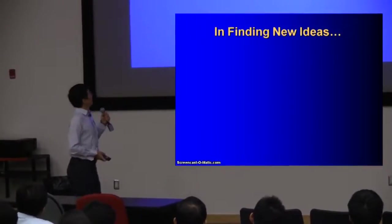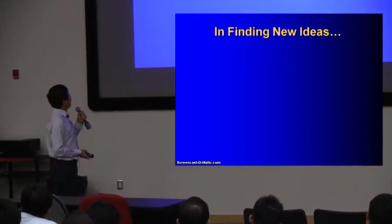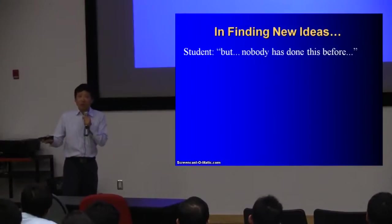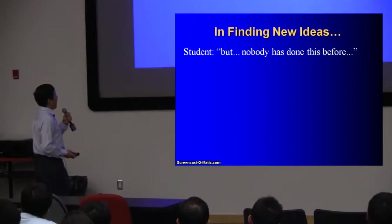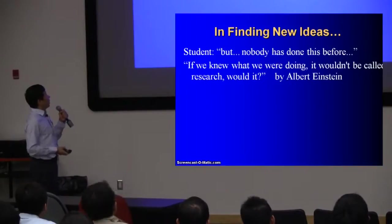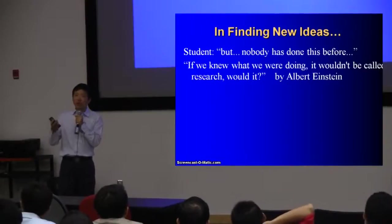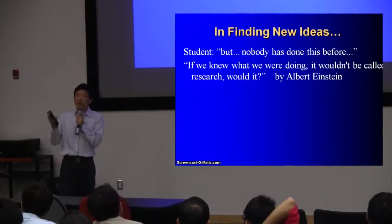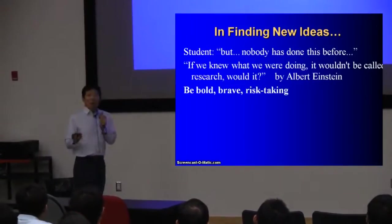In finding new ideas, sometimes during discussion with your supervisor you come up with great ideas. But then some students say, after some research, that nobody has done that before — and they say: but, but nobody has done that before, can I do it? I want to use Einstein's words: 'If we knew what we were doing, it wouldn't be called research, would it?' Doing research is to explore an unknown territory. Nobody, including your supervisor, knows for sure whether this will work out or not. So being a graduate student, you need to be bold, brave, and risk-taking.